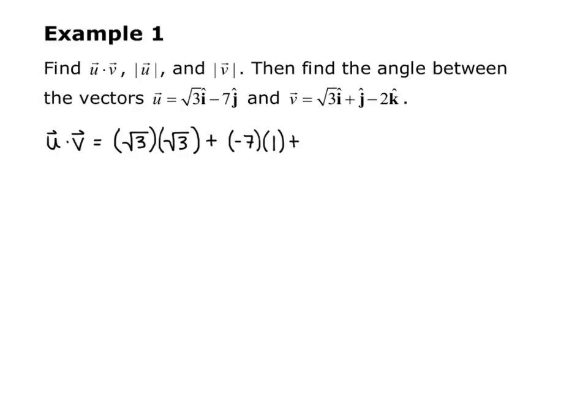plus the k components multiplied together. And notice vector u does not have a k component, so that is zero. So I'll have zero times negative 2. So I get, simplifying this, I get 3 minus 7 plus 0, which gives me negative 4. So the dot product of u and v is negative 4.